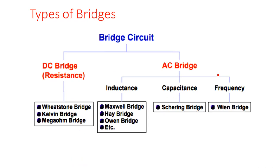Broadly, there are two types of bridges classified based on the input applied: DC bridge and AC bridge. In a DC bridge, we apply a DC input; in an AC bridge, we apply a sinusoidal AC signal with some frequency. In a DC bridge, we can only measure resistance — we cannot measure reactance.